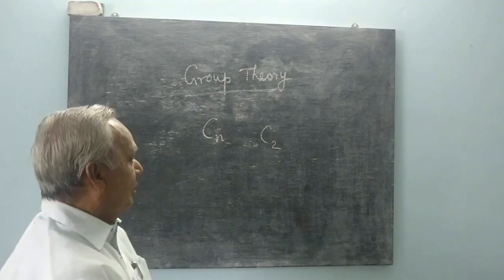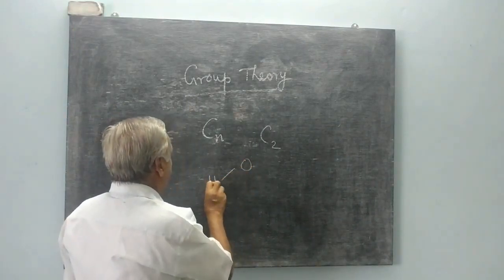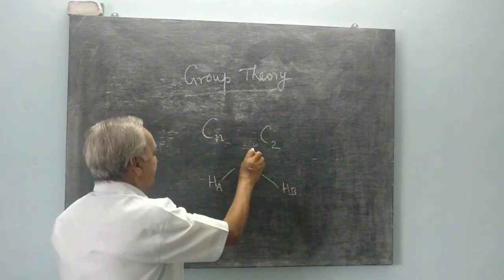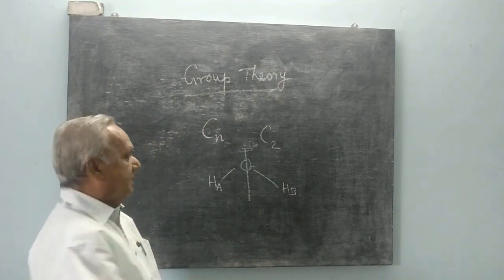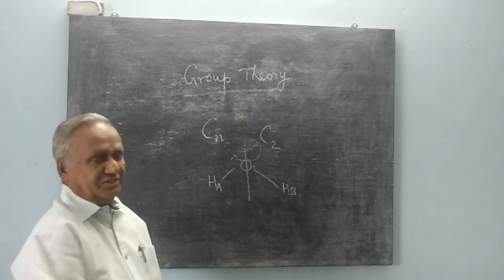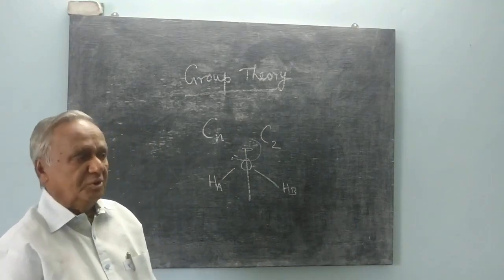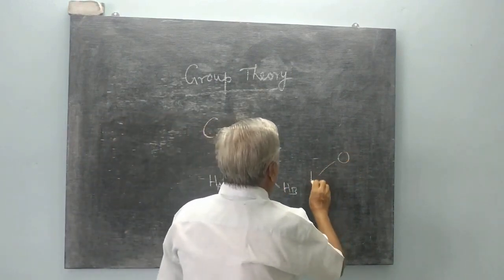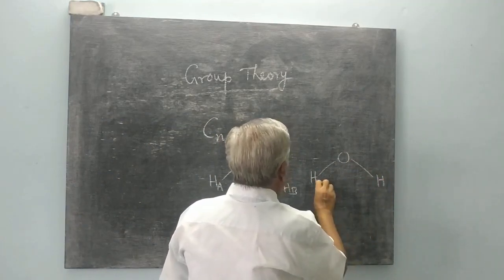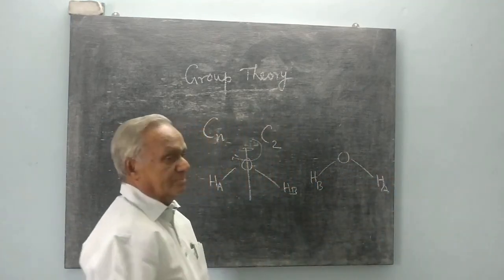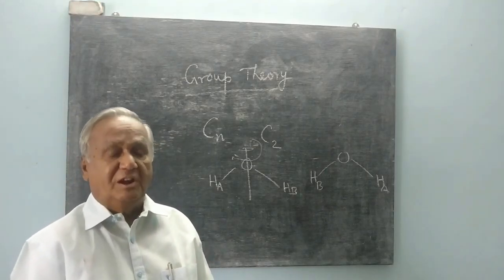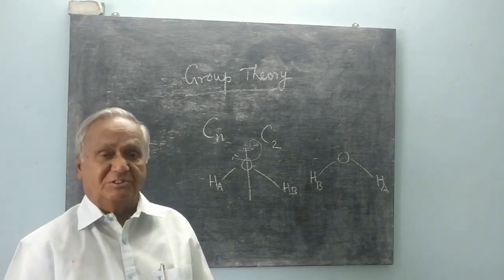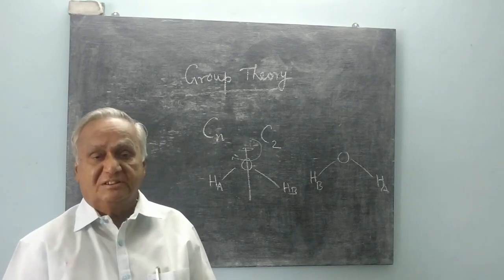A very simple example is the water molecule. This is the axis of symmetry. If I give a 180-degree rotation about this axis, what happens is B goes over here and A comes over here. This structure is an indistinguishable structure — not an identical structure, because A and B have exchanged positions. This operation is called rotation.